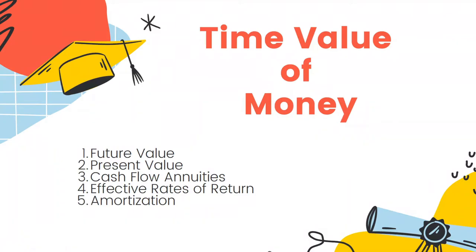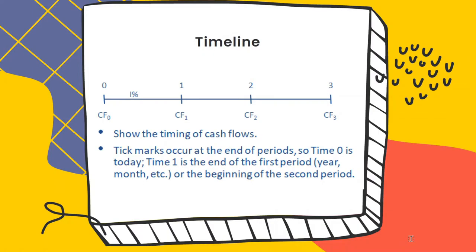Lecture number five: Time Value of Money. In these chapters we will learn how to calculate future value, present value, and the calculations and applications of cash flow annuities. We will learn how to calculate effective rate of returns. The lectures will wrap up with a concept of amortization, which is an application based on the time value of money.